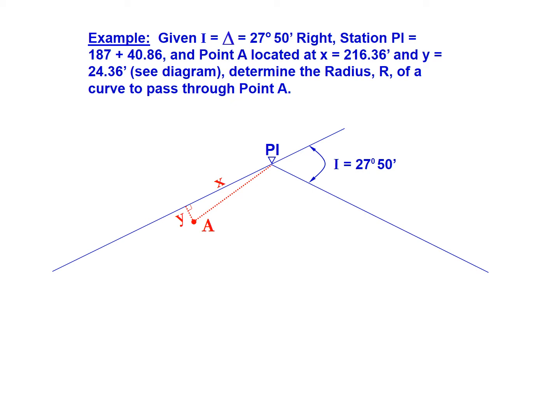In this example, we'll look at how to pass a horizontal curve through a fixed point. We have a curve with a PI at station 187+40.86 and a deflection angle of 27 degrees 50 minutes. Point A is the point we want to fit the horizontal curve through.